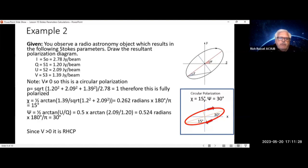Chi, if you work out all those values, equals 0.262 radians, which equals 15 degrees. And psi equals 30 degrees. Note also that since V is greater than 0, it is right-hand circular polarized. You see that the chi value, 15 degrees, gives you a width of the ellipse, and 30 degrees gives you your orientation angle.